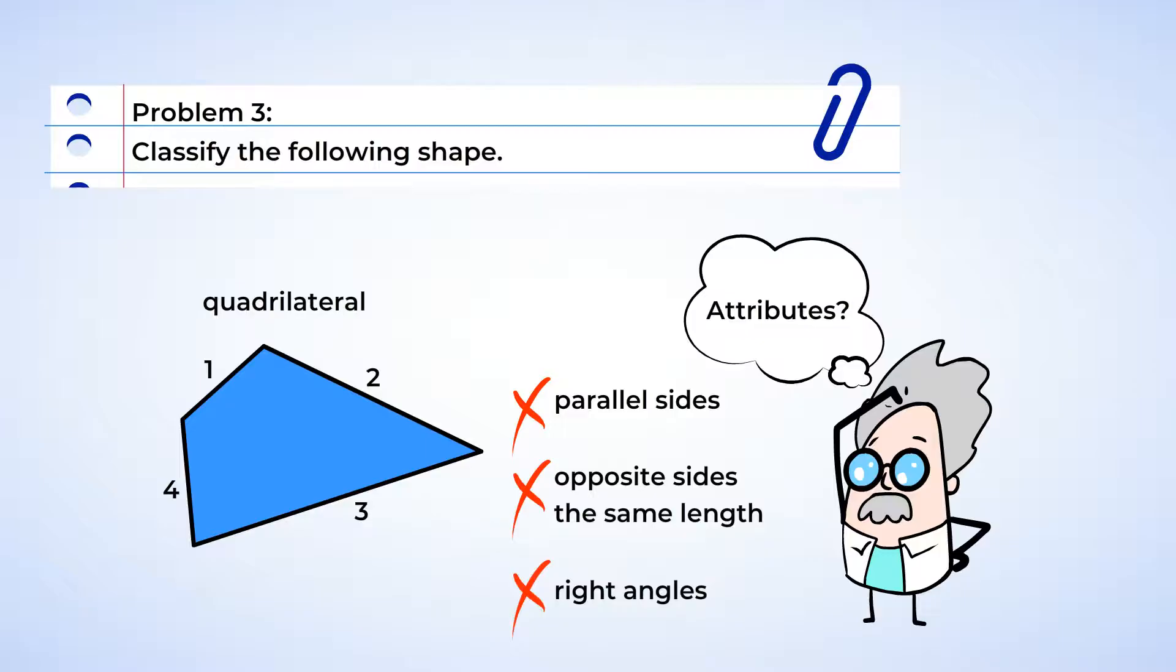Do the sides meet at any right angle corners? No. Well, it looks like this is not any special type of quadrilateral. And that means we can classify this shape as just a quadrilateral.